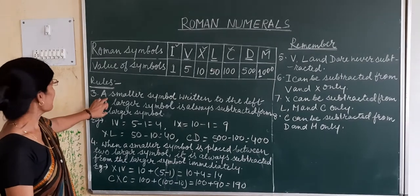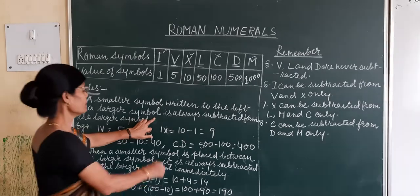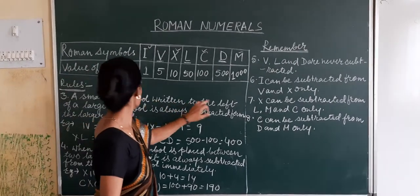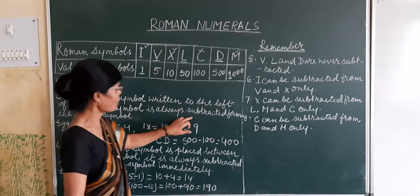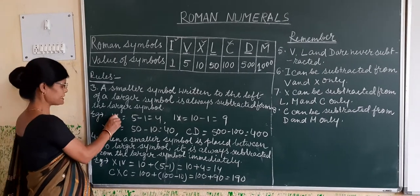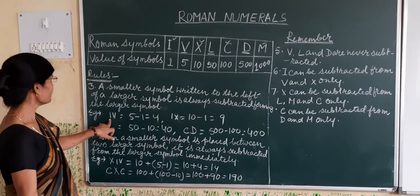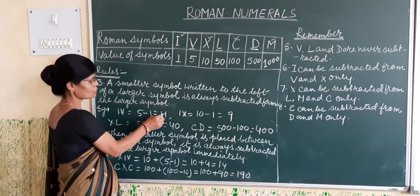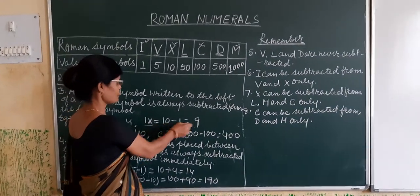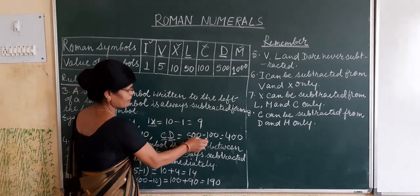The third rule: a smaller symbol written to the left of a larger symbol is always subtracted from the larger symbol. For example, IV — I is placed before V, so V minus I equals 5 minus 1 equals 4. IX — I is subtracted from X: 10 minus 1 equals 9. XL equals 50 minus 10 equals 40. CD equals 500 minus 100 equals 400.